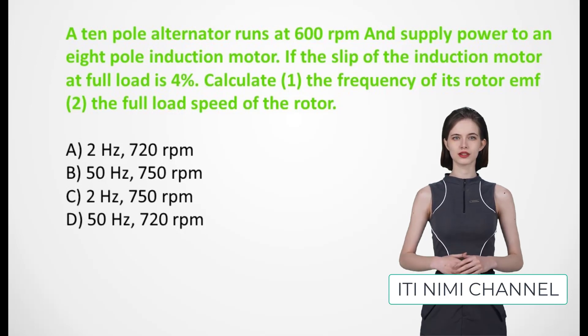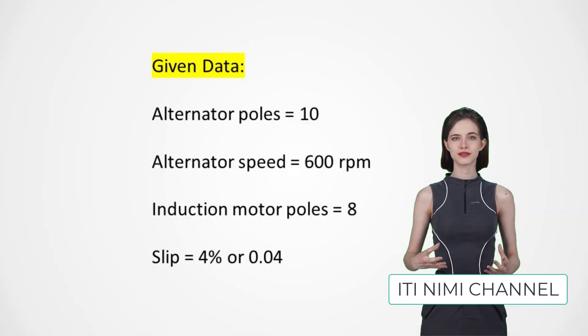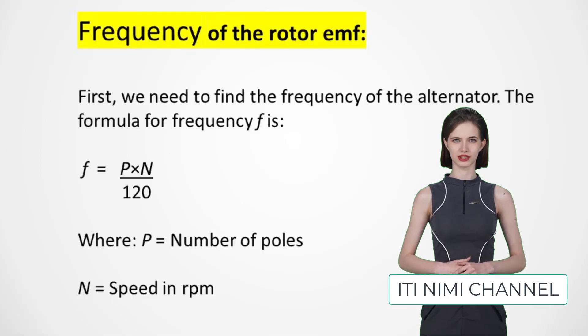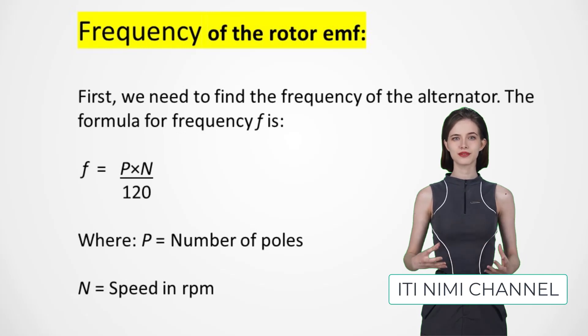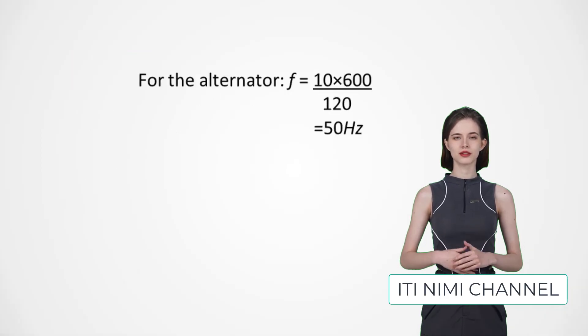Let's start with the frequency of the rotor EMF. To determine the frequency of the alternator, we use the formula: frequency equals number of poles multiplied by speed divided by 120. Substituting in our values, the frequency is 50 Hz.